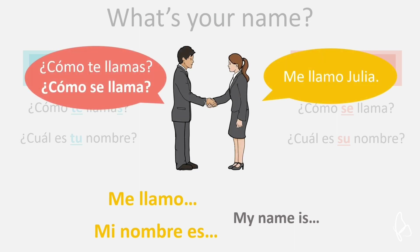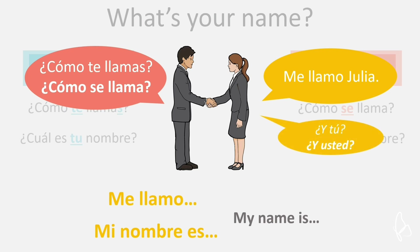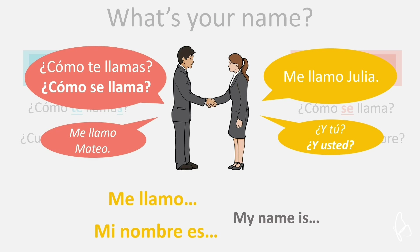So let's look at an example. We have ¿Cómo te llamas? for informal, or ¿Cómo se llama? for formal. In this example, maybe we can assume that they are in a formal setting based on their dress, so let's go with ¿Cómo se llama? In response, she says Me llamo. And now she would like to know his name. She can simply say 'And you,' which in Spanish is Y tú — informal — or Y usted — formal. So let's go with Y usted in this example, and he responds Me llamo Mateo.